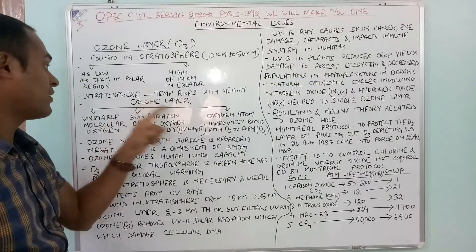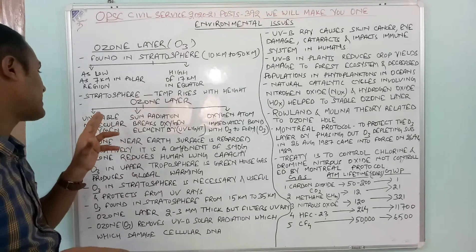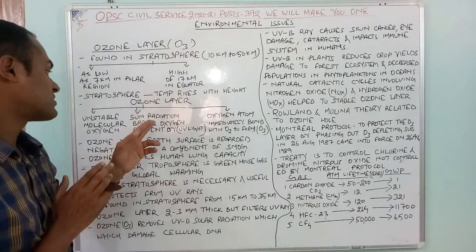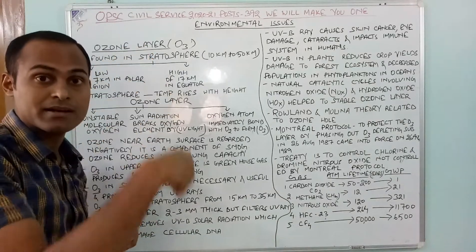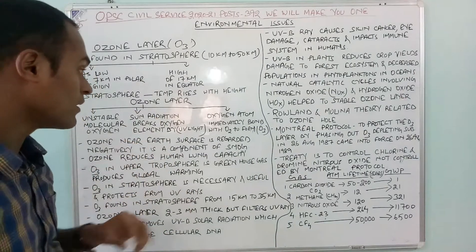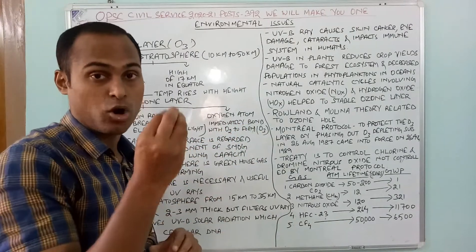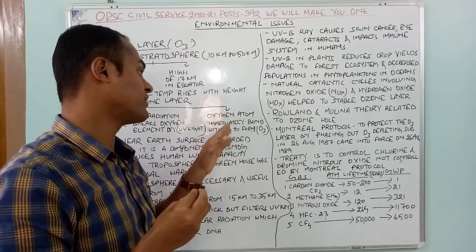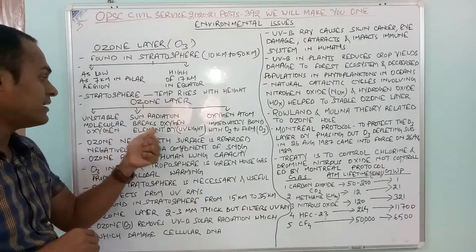Ozone layer is an unstable molecular oxygen. When sun radiation — specifically ultraviolet light — comes and strikes, it breaks the oxygen element. The oxygen atom immediately bonds with O2 to form O3. That is how the ozone layer is formed.